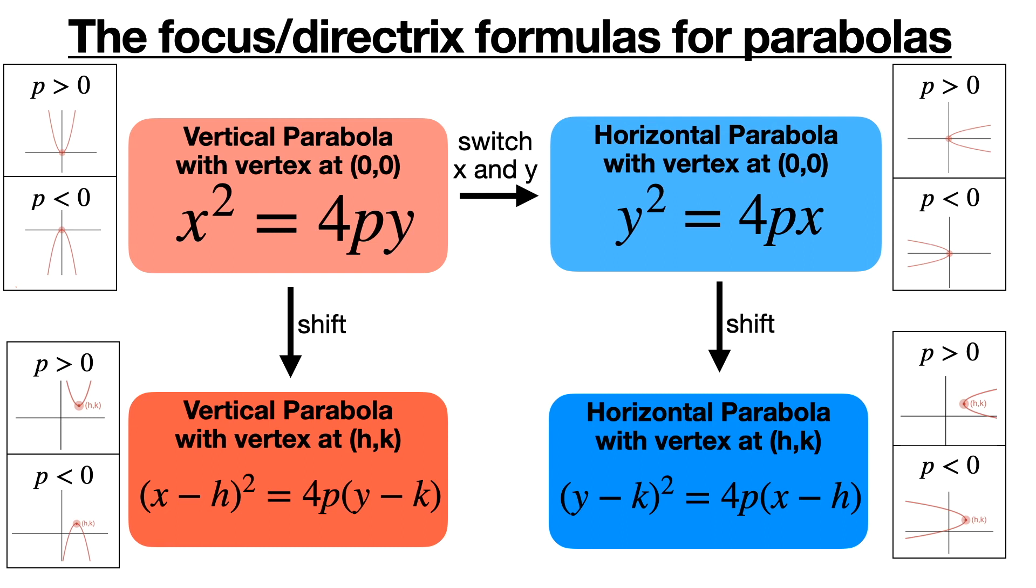And then by shifting that one, we get the general equation for a horizontal parabola with vertex at (h,k). So I created this slide that would summarize all the different things that have been going on up to this point, as well as having the picture of what each of these different parabola types would look like.